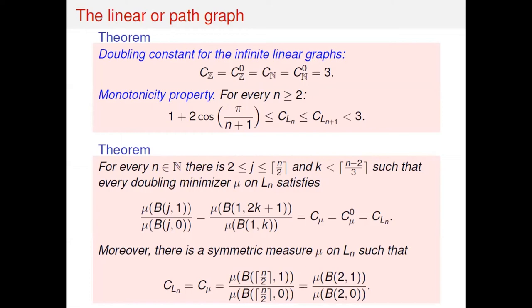For infinite paths such as the integers Z and natural numbers N, the optimal constants — both general and restricted — are equal to 3. In general, these constants grow monotonically. An open problem is proving monotonicity of the general doubling constant under taking subgraphs: we cannot yet prove that if G is a subgraph of a larger graph, the constant increases.